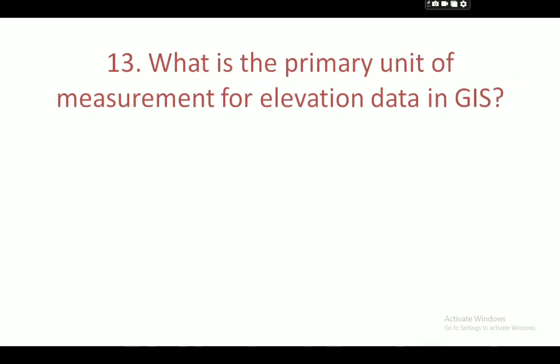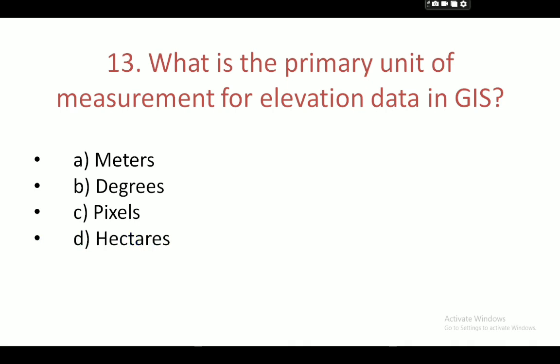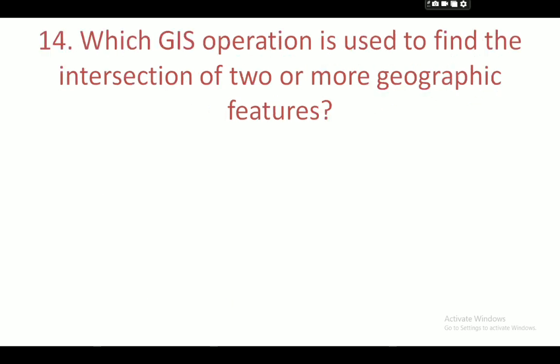Next question: what is the primary unit of measurement for elevation data in GIS? Your options are: A — meters, B — degrees, C — pixels, and D — hectares. Your correct answer is meters.